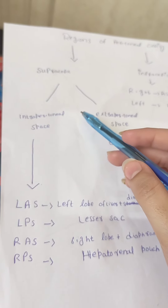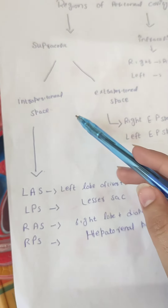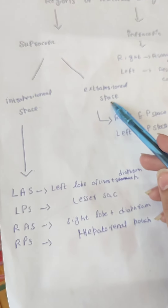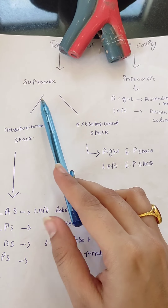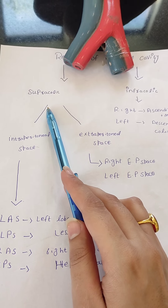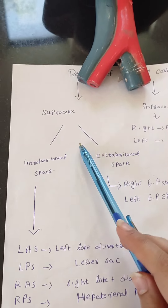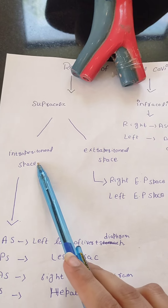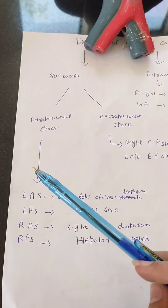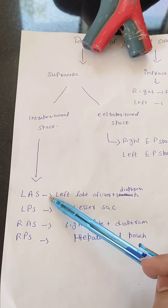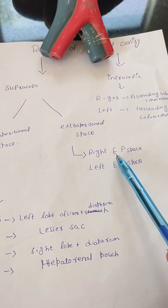The supracolic compartment is further divided into two spaces: one is known as the intraperitoneal space and one is known as the extraperitoneal space. The region above the transverse colon is supracolic, and below is infracolic. The supracolic compartment further divides into intraperitoneal space, which has 4 sub-spaces, and extraperitoneal space, which has 2 sub-spaces.